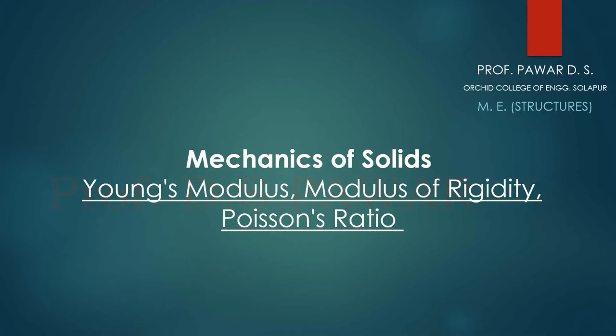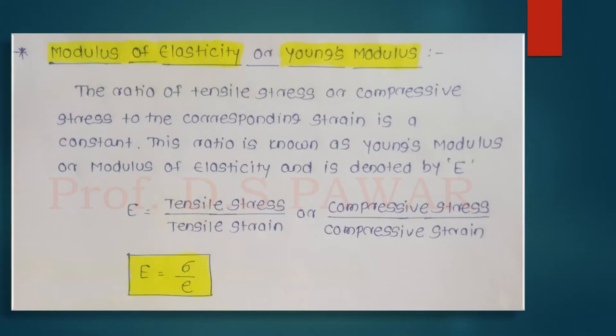Good morning to all of you. Today we are going to see Young's modulus, modulus of rigidity, and what is meant by Poisson's ratio from the mechanics of solids. So one by one we are going to see what these technical terms are. First, we are going to see what is modulus — another name for Young's modulus is modulus of elasticity. The ratio of tensile stress or compressive stress to the corresponding strain is constant, and this ratio is known as Young's modulus or modulus of elasticity, denoted by E.